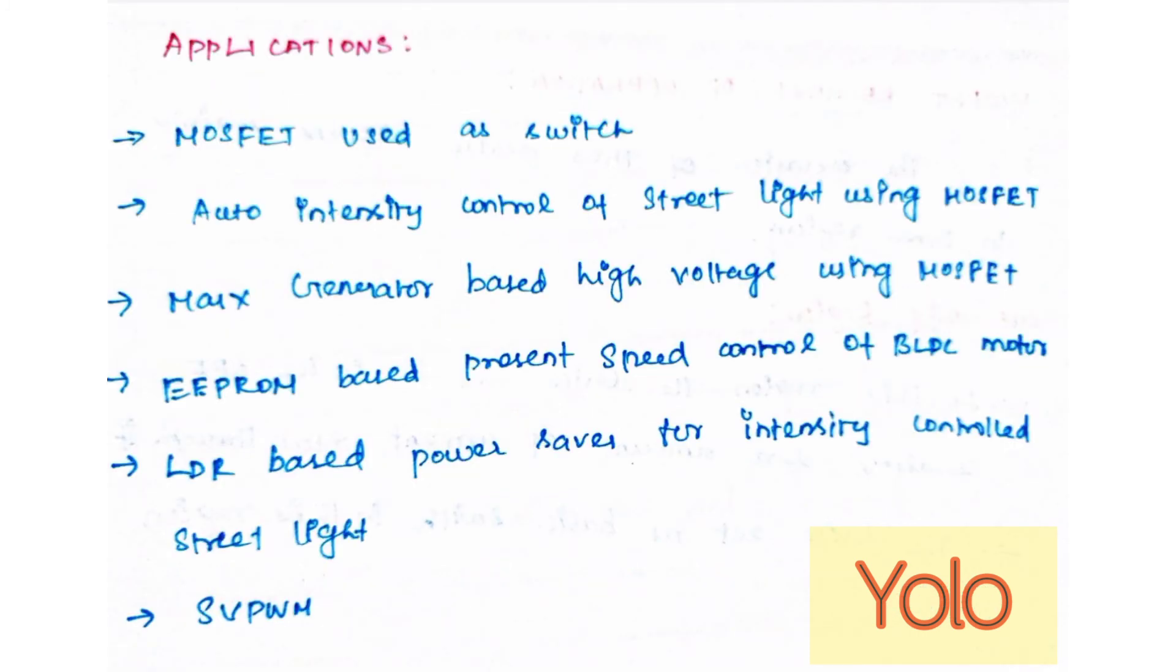Applications of MOSFET: MOSFET is used in various electrical and electronic projects. First one, MOSFET used as a switch. Second one, auto intensity control of street light using MOSFET. Third one, Marx generator-based high voltage using MOSFET. Fourth one, EEPROM-based present speed control of BLDC motor, that is brushless DC motor. And fifth one, LDR-based power saver for intensity-controlled street light. And last one, SVPWM, that is space vector pulse width modulation control.